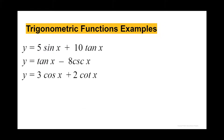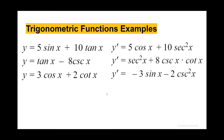We have some examples. I'm going to let you write these down and then go over the answers. For the first one, y equals 5 times sine of x plus 10 tangent x, so the derivative equals 5 cosine of x plus 10 secant squared x. For the second one, y equals tangent x minus 8 cosecant x, so the derivative equals secant squared x plus 8 cosecant x times cotangent x. For the third one, 3 cosine x plus 2 cotangent x, so the derivative equals negative 3 sine x minus 2 cosecant squared x.